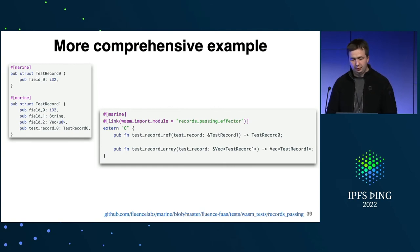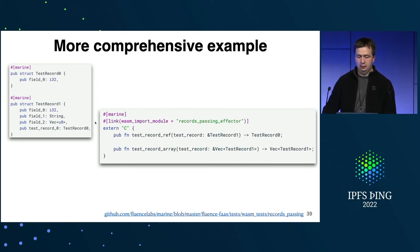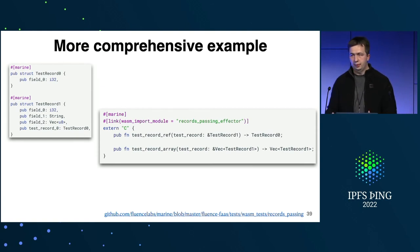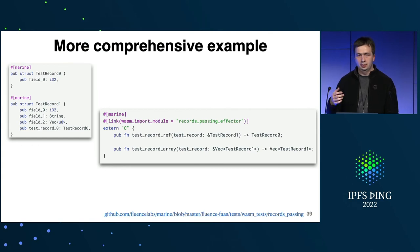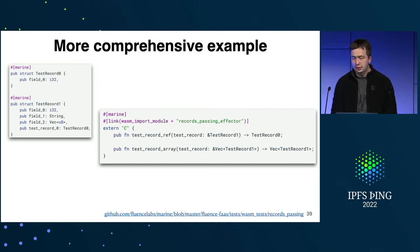Not only strings and vectors can be passed — you can pass records (i.e., structs) and even references, though that's rarely useful. The current limitation is that we don't support enums, because while we could add them to the Marine runtime, it would be very hard to add them on the Aqua side. If someone wants to use Marine and there's demand for enums, we could add them easily.